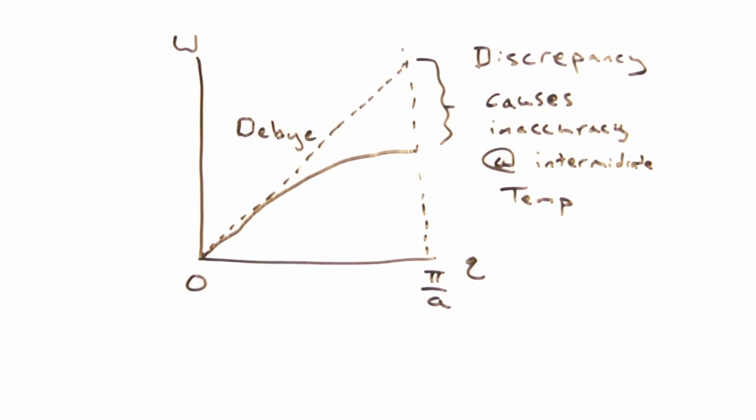You're absolutely right. At intermediate temperatures, the Debye model is going to be a bit off. Nevertheless, you're going to find that the Debye model is used throughout solid state physics, as it's a nice combination of being a decent approximation and being ridiculously simple.